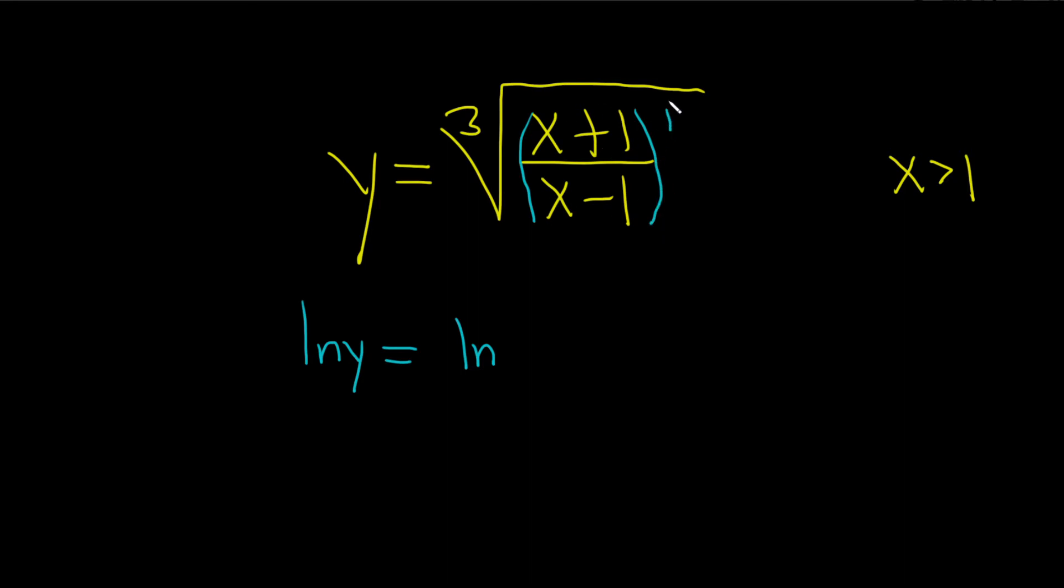There is really a parenthesis and a 1 here. So it's really all of this, and it's 1 over 3. So it's like this: x plus 1 over x minus 1. That's all to the 1 over 3, just like that.